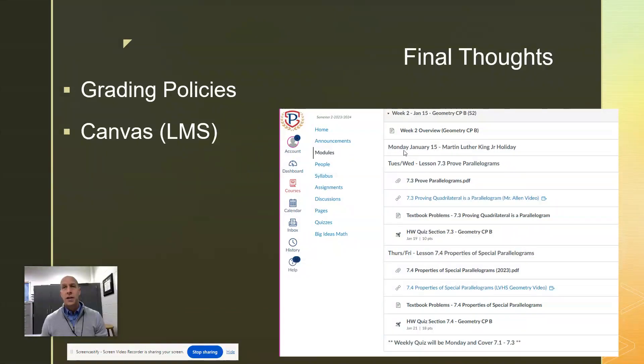So you can see that it says Monday, we're off on Martin Luther King Day. Tuesday, which is today, pretty cold day, but we'll be looking at section 7.3, which is on proving parallelograms.